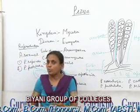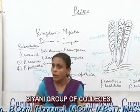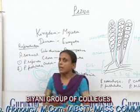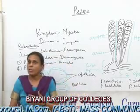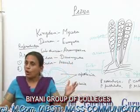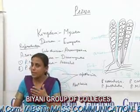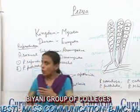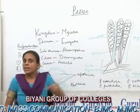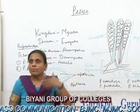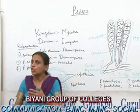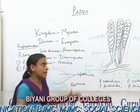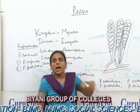Chlamydospores are thick-walled resistant cells which arise in the intercalary position on the mycelium. Under adverse conditions they remain dormant, but on the onset of favorable conditions these chlamydospores germinate by means of a germ tube and form a new mycelium.